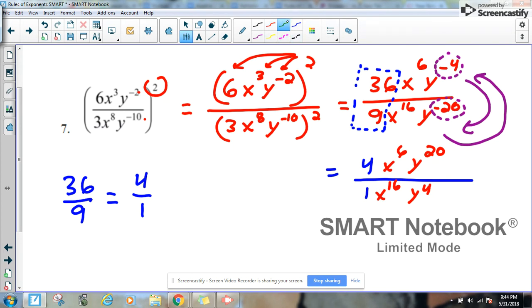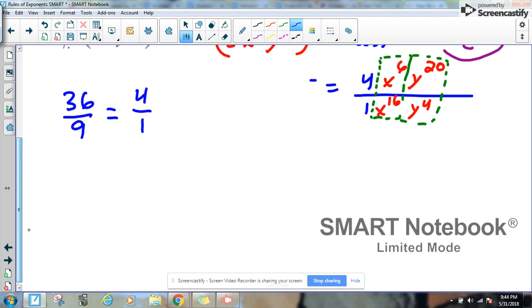I'm almost done with the problem now. All I need to do now is look at my rules of exponents. I'm looking at rule number 3, which basically states same base division, I subtract the exponents. So let's see if we can do that. Equals 4 over 1.